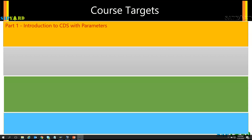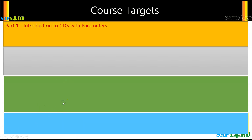In the first part, we will talk about parameters — what are they, why do we need them, how are they handled in the current data dictionary, and how do we handle them in CDS.